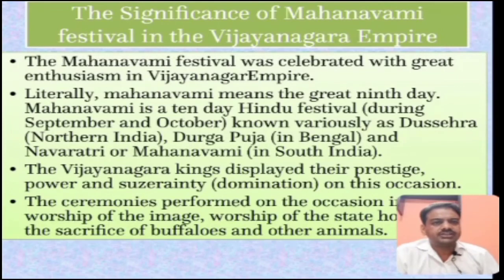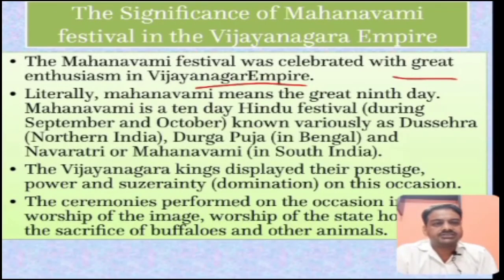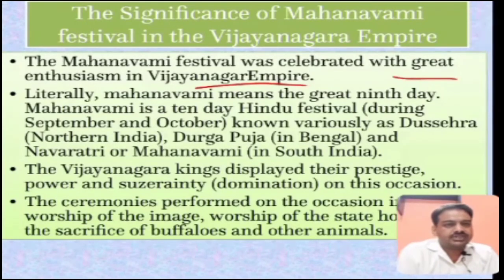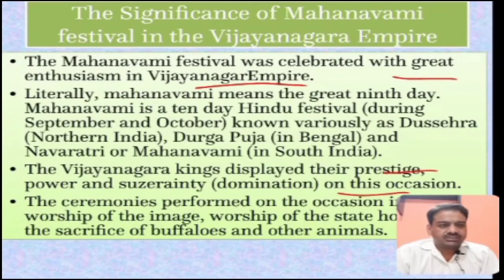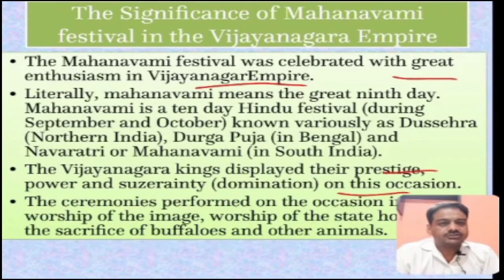The Mahanavami festival was celebrated with great enthusiasm in the Vijayanagara empire. These Mahanavami festivals are related to the Navratras, where 9 forms of the goddess are worshipped. Literally Mahanavami means the great 9th day. It is a 10-day Hindu festival; on the last day there is Dussehra, and on the 9th day there is Durga Puja, celebrated especially in Bengal. The Vijayanagara kings displayed their prestige, power and suzerainty on this occasion, with ceremonies including worship of the image of horses - the royal symbol - and sacrifices of buffalos and other animals.